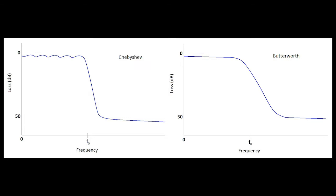The Chebyshev stop band is relatively flat. In the case of Butterworth, it does not have the ripple in the pass band area. If drawn at a little higher resolution, you would find that the Butterworth has slightly lower losses than the Chebyshev in the pass band region.